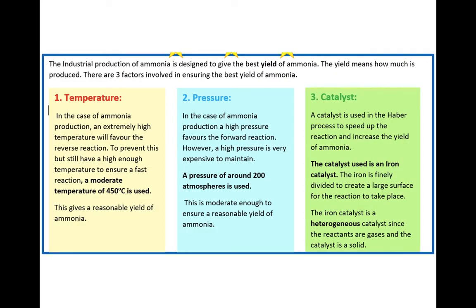The industrial production of ammonia is designed to give the best yield of ammonia, and in order to achieve this, Haber found that controlling temperature, pressure, and the addition of a catalyst were vitally important. In the case of ammonia production, if you have an extremely high temperature, this will favour the reverse reaction — it will cause any ammonia you've made to return back to nitrogen and hydrogen. To stop this from happening, but still have the temperature high enough to ensure a fast reaction, we use a moderate temperature of 450 degrees centigrade, which gives a reasonable yield of ammonia.